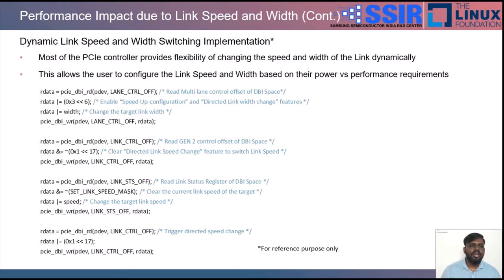Before reviewing the plots, a prototype code demonstrates dynamic switching between link speeds and link widths without performing a hard or soft reset. The controller provides features such as speed configuration, directed link speed, and link width change via hardware registers. A custom-tweaked bare-metal code configures these values through software. This reference code helps application designers switch between performance and power-saving features, and also allows fixing configuration-related changes or broken links dynamically.